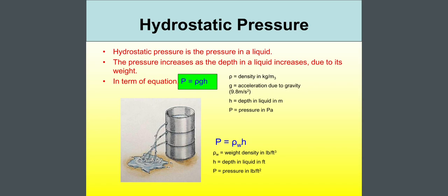Hydrostatic pressure. Hydrostatic pressure is the pressure in a liquid. The pressure increases as the depth in a liquid increases due to its weight. In term of equation, P is equal to rho g s where rho is equal to density in kg per meter cube. G is equal to acceleration due to gravity 9.8 meter per second square. We can write P is equal to rho w, weight density. H is equal to depth in liquid in feet and P is equal to pressure.